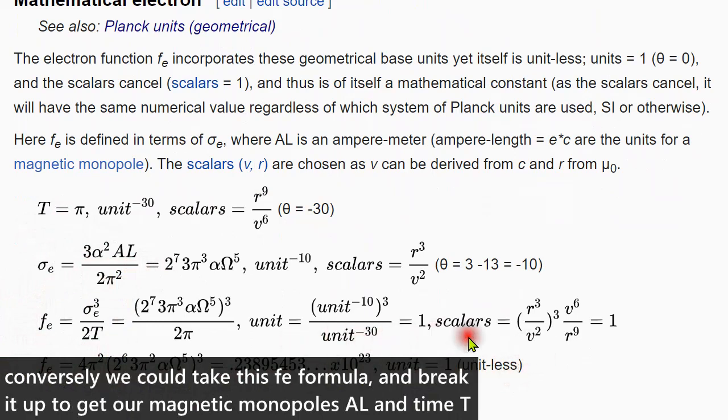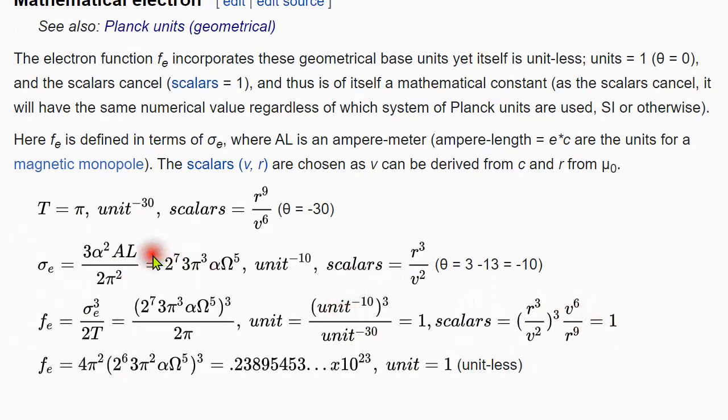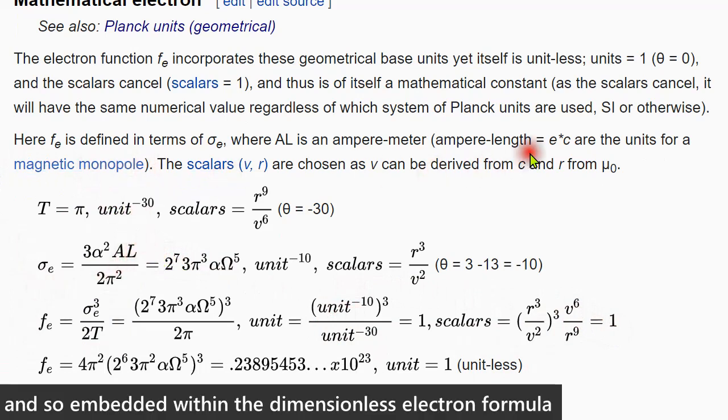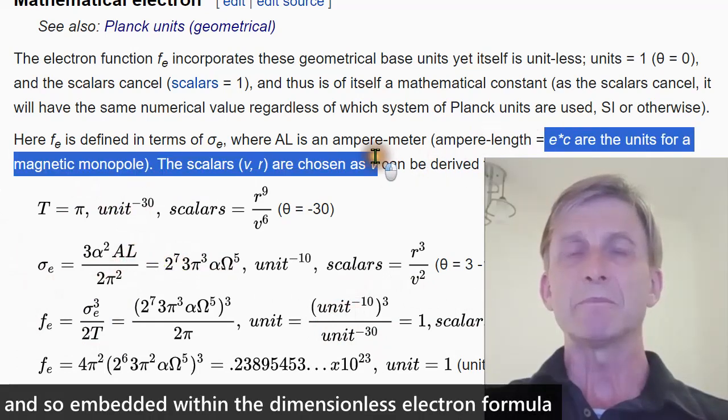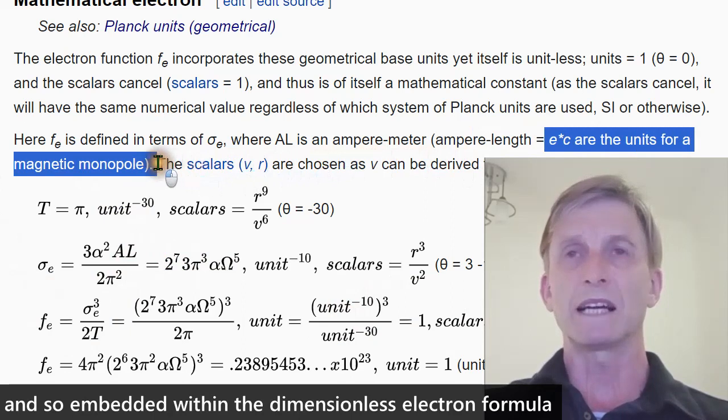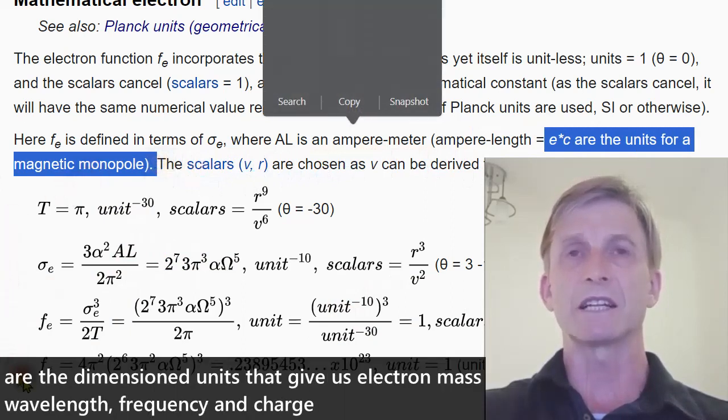Conversely, we can take this Fe formula and break it up to get our magnetic monopoles and time t. And so embedded within the dimensionless electron formula are the dimensioned units that give us electron mass, wavelength, frequency and charge.